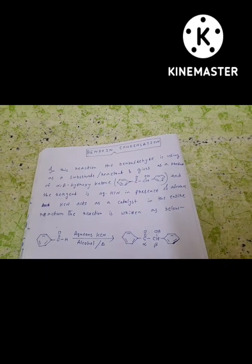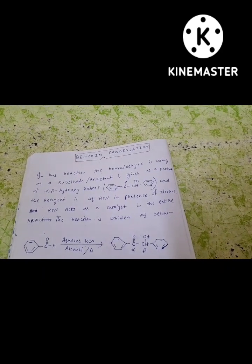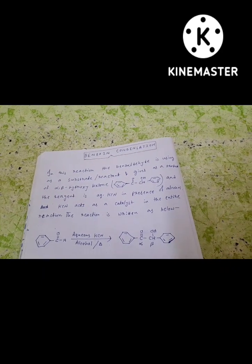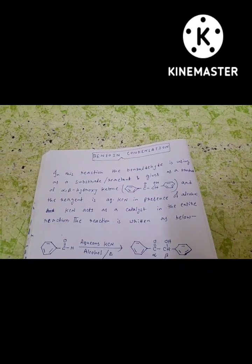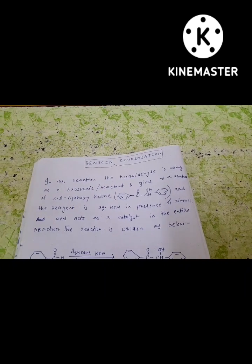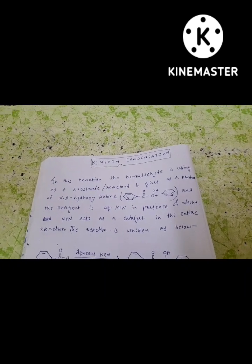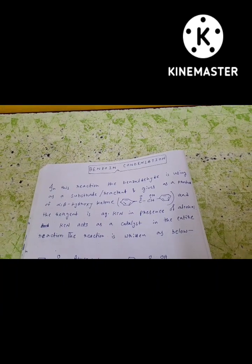And it gives us a product of alpha-beta hydroxy ketone. You can see this type of structure is produced. The reagent is aqueous KCN in presence of alcohol. Here KCN acts as a catalyst in the entire reaction.